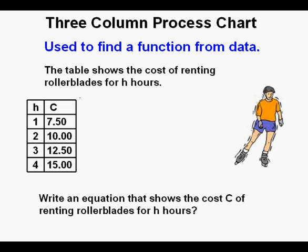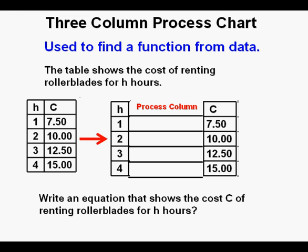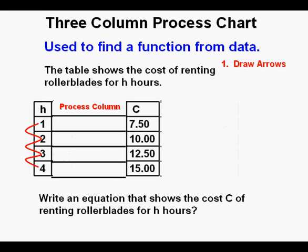Here's the first problem we're looking at. The table shows the cost of renting roller skates for h hours. We're going to take this table and add a third column in between the input column and the output column — this is called a Process Column. With the Process Column now in place, we start our analysis of the data by drawing arrows on the outside of the table: one set on the left or input side, and the other set on the right or output side.